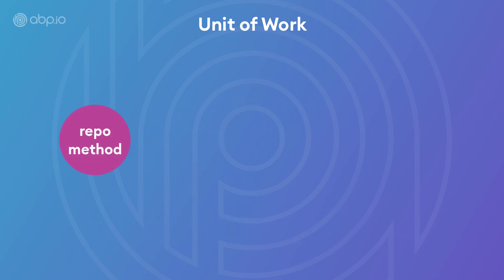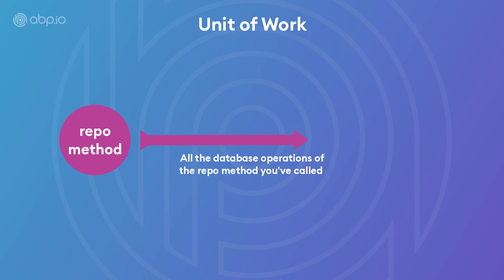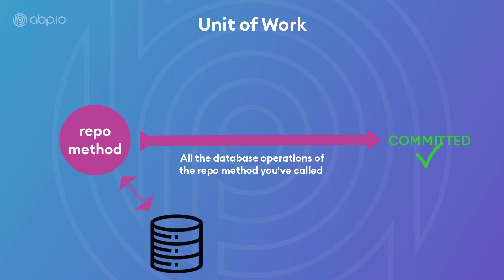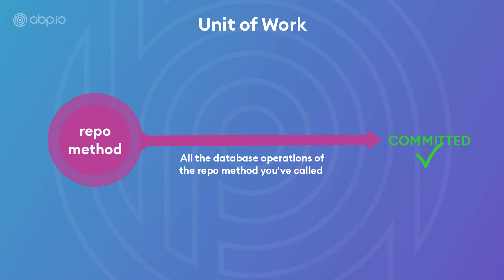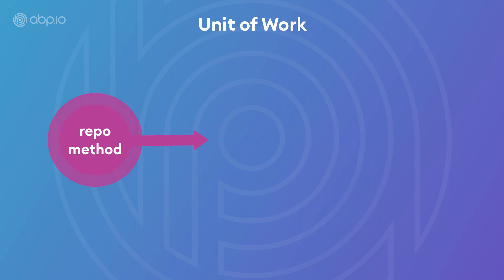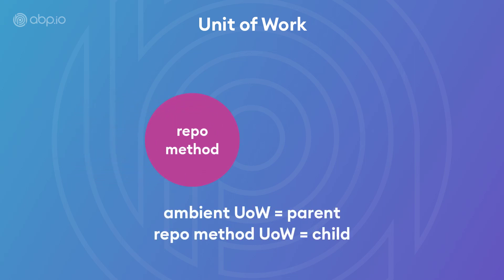Now, suppose you called a repository method and no unit of work has started yet, so there isn't any ambient unit of work in action. That will automatically begin a new transactional unit of work involving all the operations done in this repository method, and it'll commit the transaction if the method doesn't throw any exception. The repository method itself doesn't know anything about the unit of work or the transaction at all — it just works on regular database objects, and the entire unit of work is handled by the ABP framework. However, if there is already an ambient unit of work, then this automatically generated unit of work will not begin. Instead, it'll just be included with the ambient unit of work.